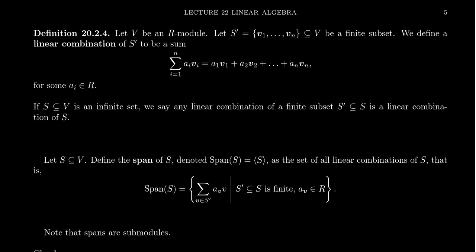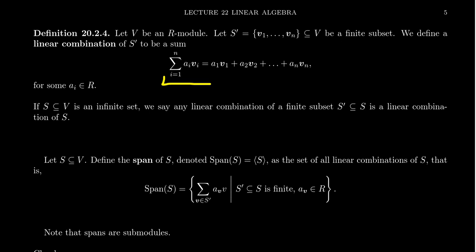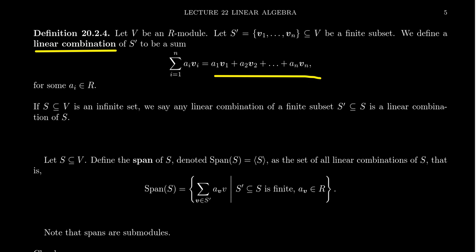Some vocabulary relevant to subspaces and submodules is the idea of linear combinations and generation. Suppose we have an R-module V and a finite subset S' containing vectors v₁, v₂, up to vₙ. We define a linear combination of S' to be a sum of the form: the sum of aᵢ times vᵢ, where aᵢ is a scalar from the ring and vᵢ is a vector from S'. Expanded, this looks like something times v₁ plus something times v₂ up to something times vₙ.